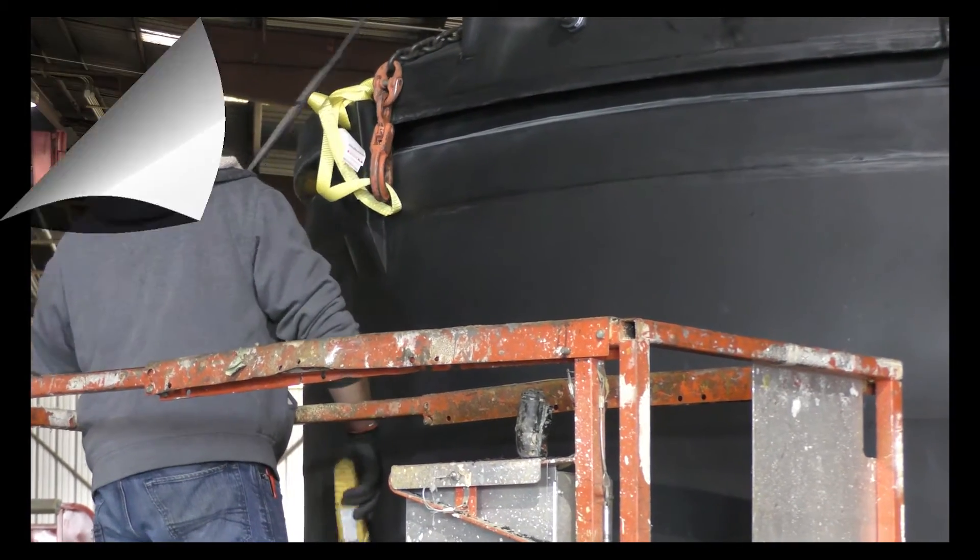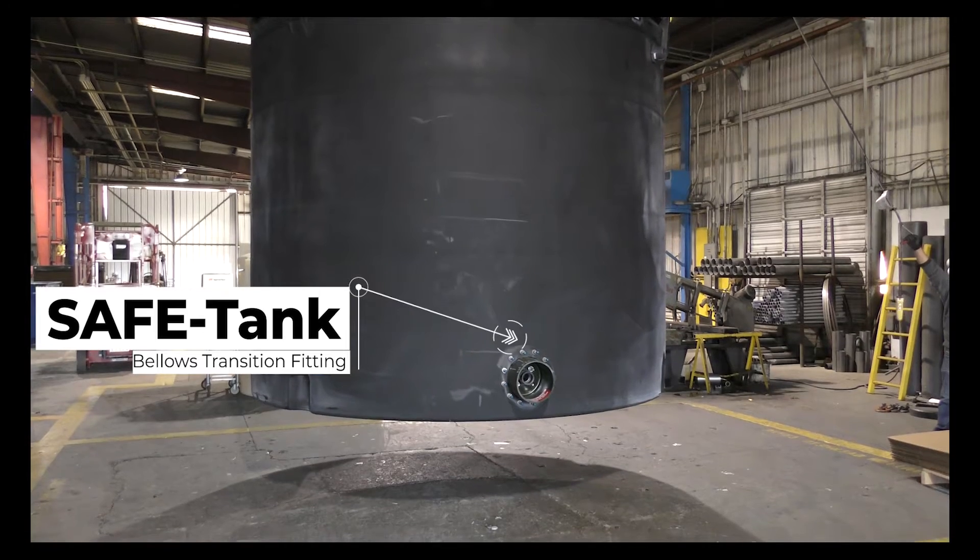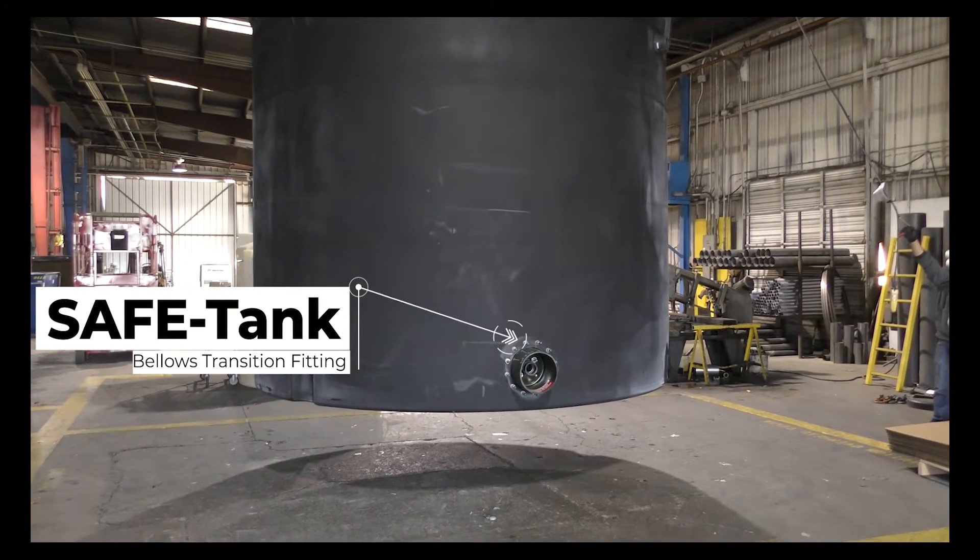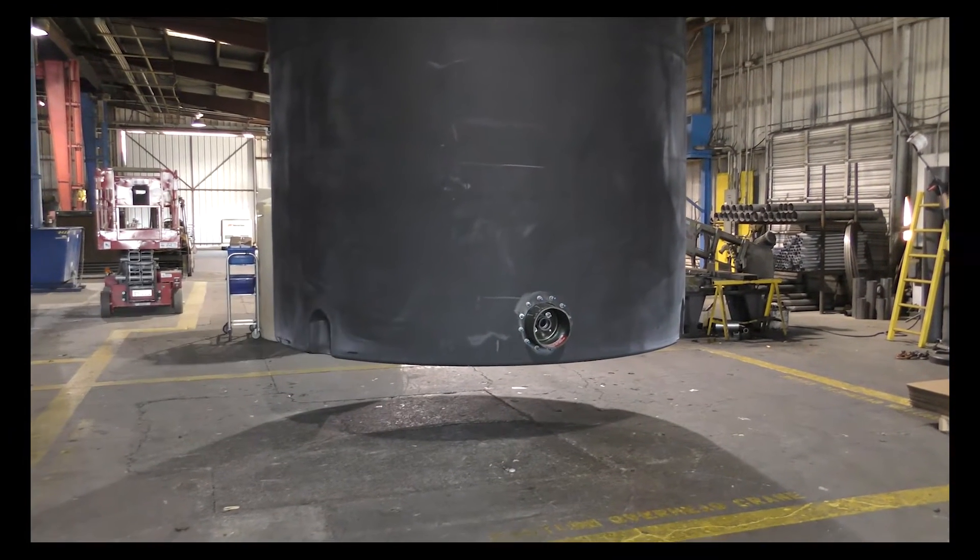When you lift the safe tank assembly off the truck, set it on the ground carefully. Keep the lifting straps installed until you're ready to set the tank in its final place once you have the tank pad prepared.